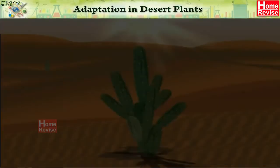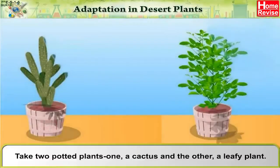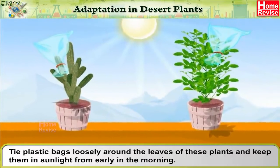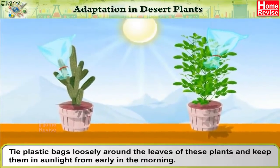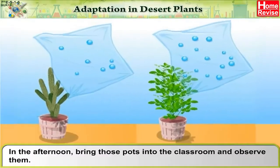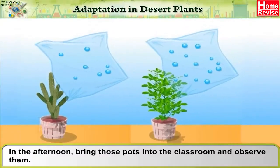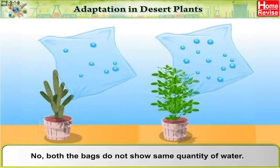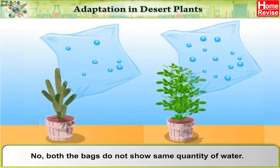Adaptation in Desert Plants: Take two potted plants, one a cactus and the other a leafy plant. Tie plastic bags loosely around the leaves and keep them in sunlight from early in the morning. In the afternoon, bring those pots into the classroom and observe them. Has the same quantity of water collected in both bags? No, both bags do not show the same quantity of water.